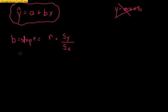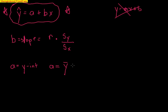a is the y-intercept. The formula to find a is: average y value minus the slope you just found times the average x value. Your calculator, once you type your data into lists, will give you the average and standard deviation for x, the average and standard deviation for y, and I'll also teach you how to find r. So this is the full equation for the least squares regression line.